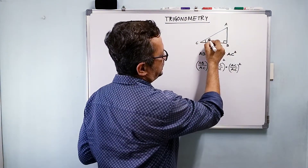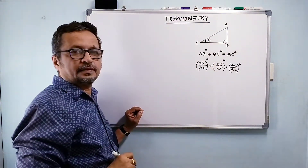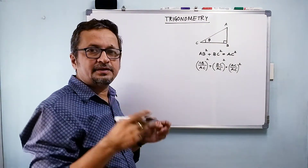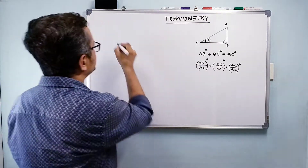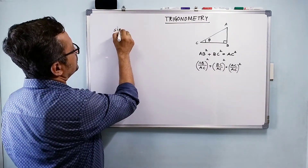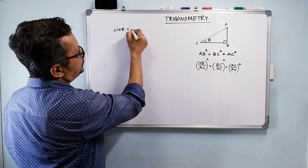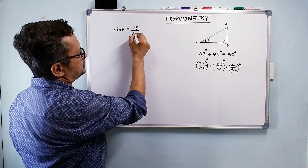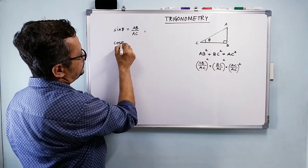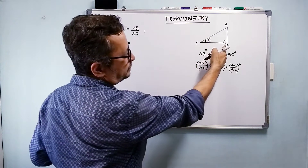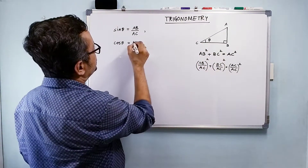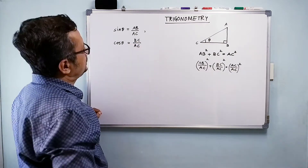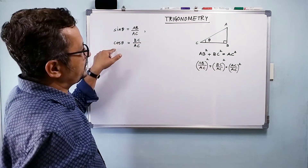Now, I am going to call this angle theta. So what is my sine theta? Sine theta is the ratio of opposite side to the hypotenuse, equal to AB upon AC, where AC is my hypotenuse. And cos theta is the adjacent side upon hypotenuse.